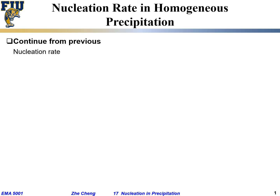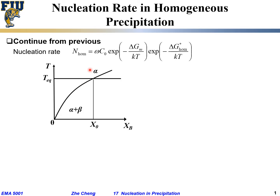Now let's continue. We said nucleation rate is given by this for so-called homogeneous precipitation. We're still looking at the binary phase diagram — this is our phase boundary. Above it is single phase alpha, below it is two-phase alpha plus beta. Our system composition is x-zero, and the equilibrium temperature is T_eq. Now I'm going to plot something like this: temperature still vertical, delta G horizontal.